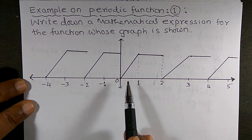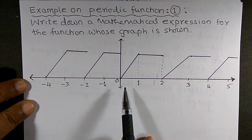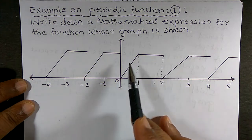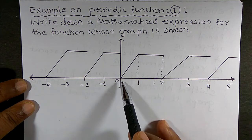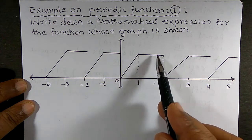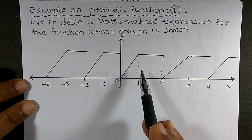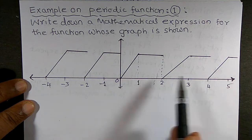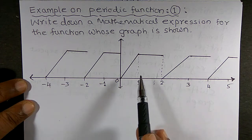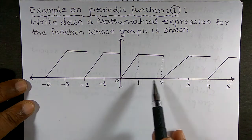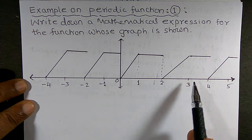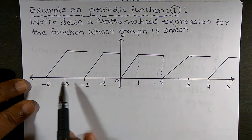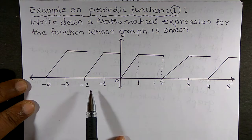When we observe the graph, we will come to know that — considering this part of the graph — it is in this form and it repeats on either side of the origin. It means it moves in the forward as well as backward direction; the same graph repeats for the next side as well as the back side.